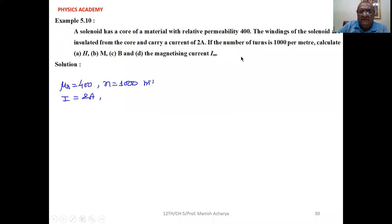Now see here, relative permeability that is given to you for the sample is μ_R equal to 400. Number of turns per meter is 1000, and current flowing through the solenoid is 2 ampere.